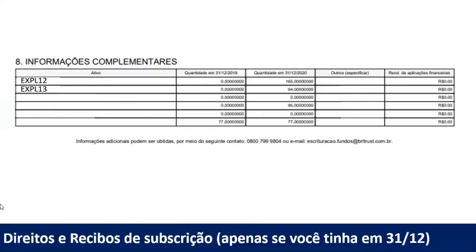No seu informe de rendimentos vai estar escrito lá se é direito de subscrição ou recibo de subscrição. Basta copiar aquela informação. Digamos que apareceu só o direito de subscrição — precisa declarar? Não precisa declarar, porque ele tem custo zero, valor zero. A Receita não obriga que você declare um bem que tem valor zero. Como o direito de subscrição tem valor zero, você não é obrigado a declarar. Mas se você quer declarar tudo mesmo para não dar margem para a malha fina, vai lá em Bens e Direitos, Grupo 99 — Outros Bens e Direitos, código 99. E na discriminação: '22 direitos de subscrição do FII EXPL12.' Situação em 31/12/2020: zero. Em 31/12/2021: zero também — porque o valor do direito é zero. Você recebeu, não comprou.